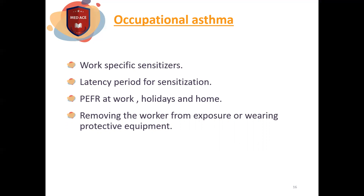Occupational asthma occurs when a person is exposed to chemicals over a long period of many years at work. For example, someone working in healthcare who is exposed to disinfectants. The history should reveal that symptoms worsen at work and improve on days away. Management options include changing jobs or using protective equipment, but this decision is not easy and requires consultation with a specialist in occupational lung diseases.